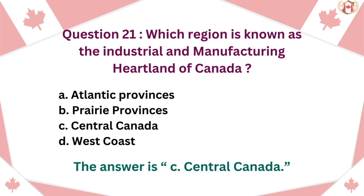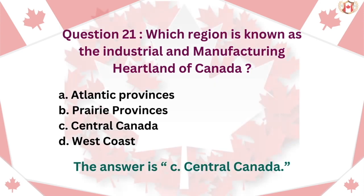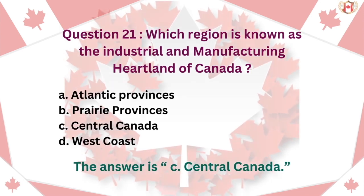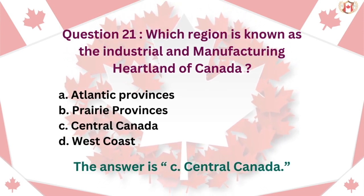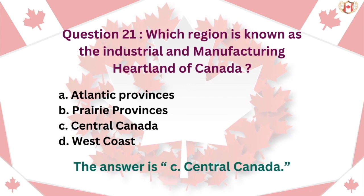Question 21: Which region is known as the Industrial and Manufacturing Heartland of Canada? A. Atlantic Provinces, B. Prairie Provinces, C. Central Canada, D. West Coast. The answer is C. Central Canada.